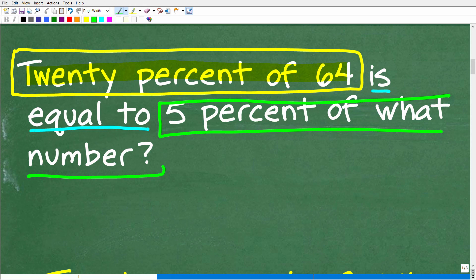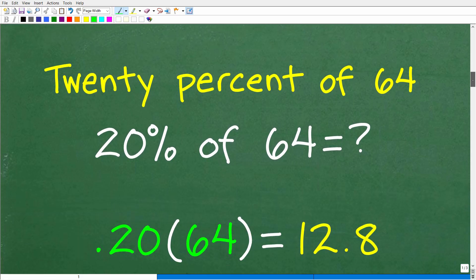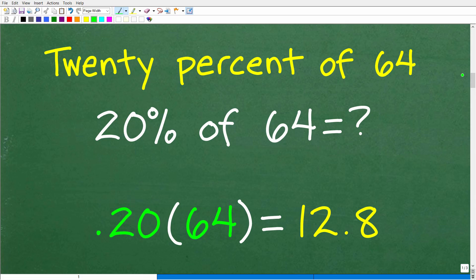20% of 64 is basically calculating this, 20% of 64. Now, because we're able to use our calculators, we should be able to actually get this number. So let's get this number first, and then we'll move on to the next steps that we need to take to figure this out. So if you can't figure out what 20% of 64 is, we're not going to be able to figure out the next step. So let's go ahead and calculate that out.